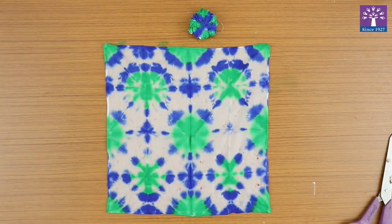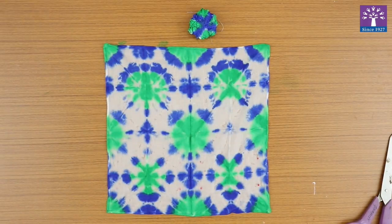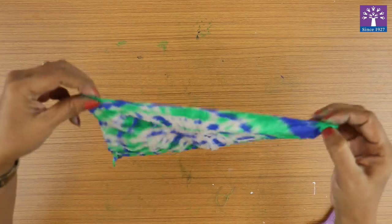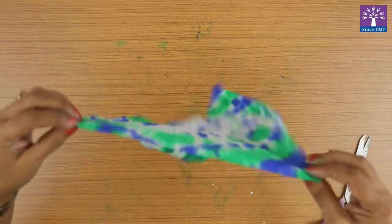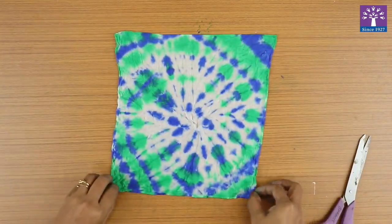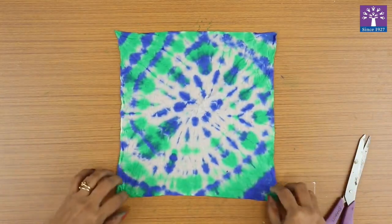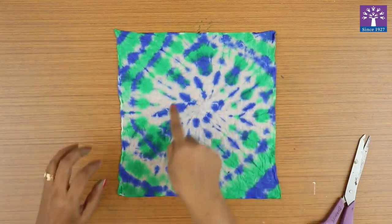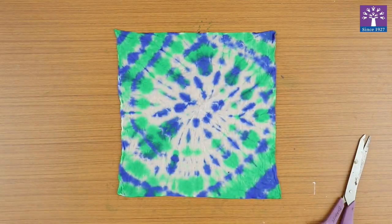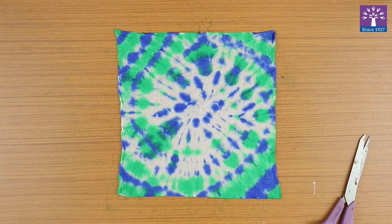See the pattern that you have got. So this is your first tie and dye folding that we had done. So this is our second tie and dye technique. Here we've got a spiral shape. You've got a circular shape. Our activity tie and dye is now ready.